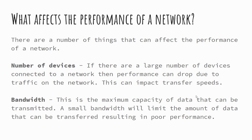Another consideration is bandwidth — the measure of the maximum capacity of data that can be transferred at any given time. You might hear of internet speeds of 50 or 100 megabytes per second; that is the maximum amount of data that can be transferred. For example, if your games console is using 20 megabits per second and someone is streaming Netflix using another 20 megabits, and you only have 50 megabits bandwidth, any additional internet activity can slow speeds across all devices depending on priorities.